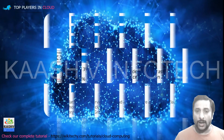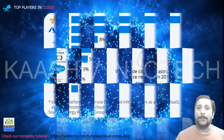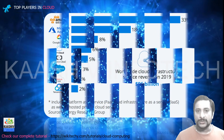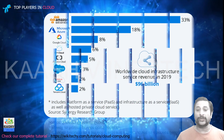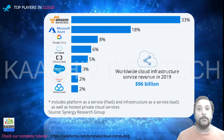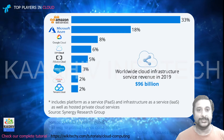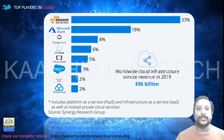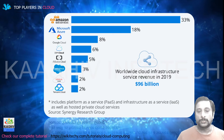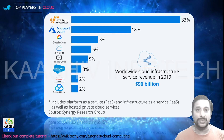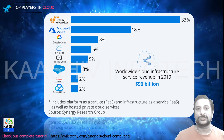Who are the top players in cloud? Amazon dominates the industry — AWS has almost 33%, one-third of the market. The second is Microsoft Azure. Third is Google Cloud. Fourth is IBM Cloud. Fifth is Alibaba. If you project your profile towards AWS or Microsoft Azure, the job opportunities are really huge.